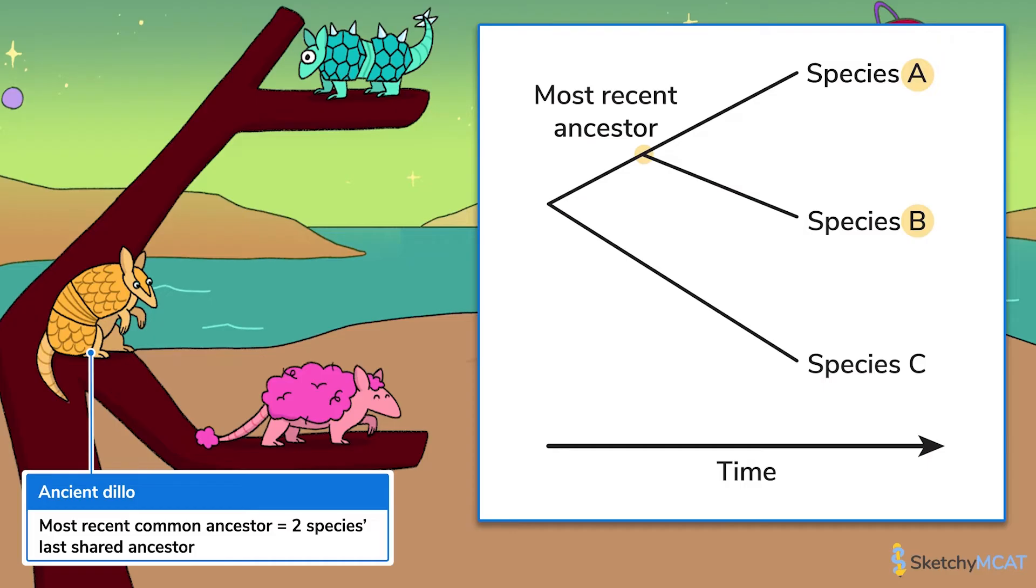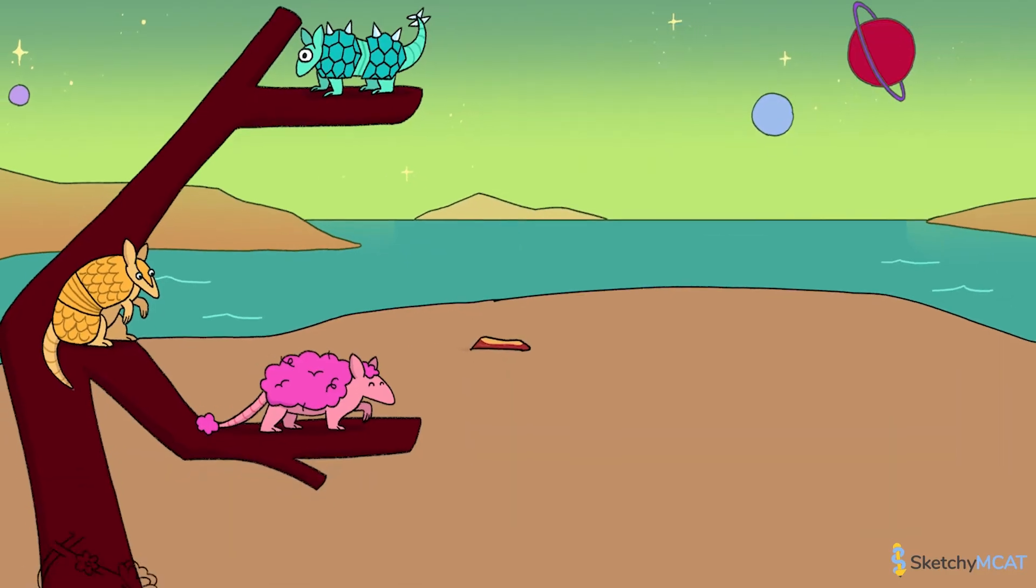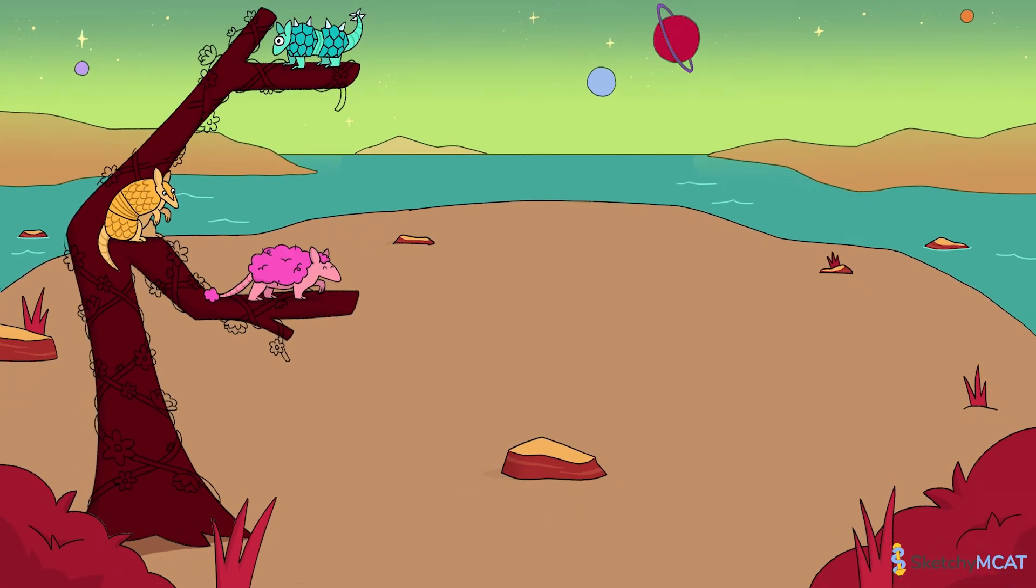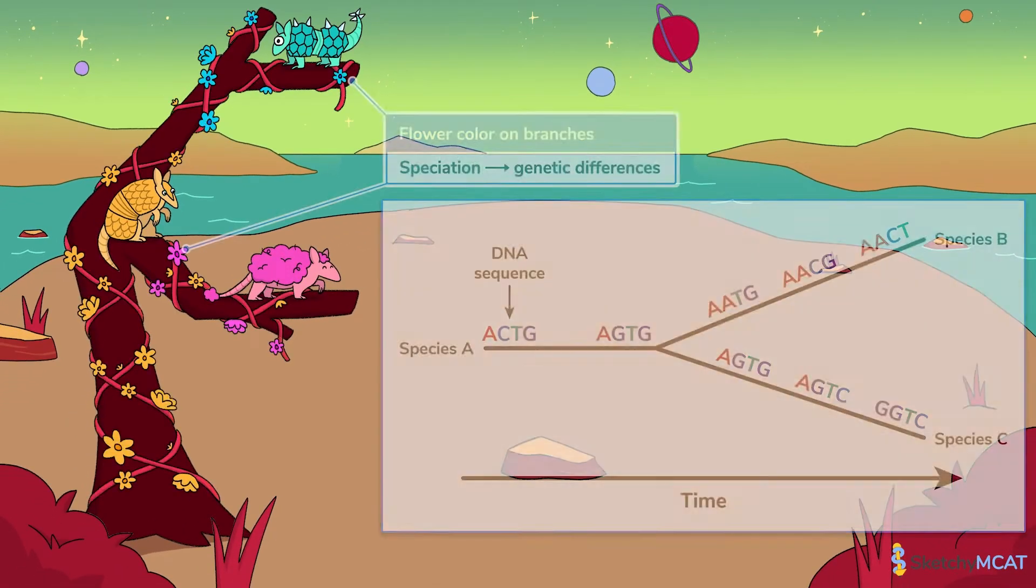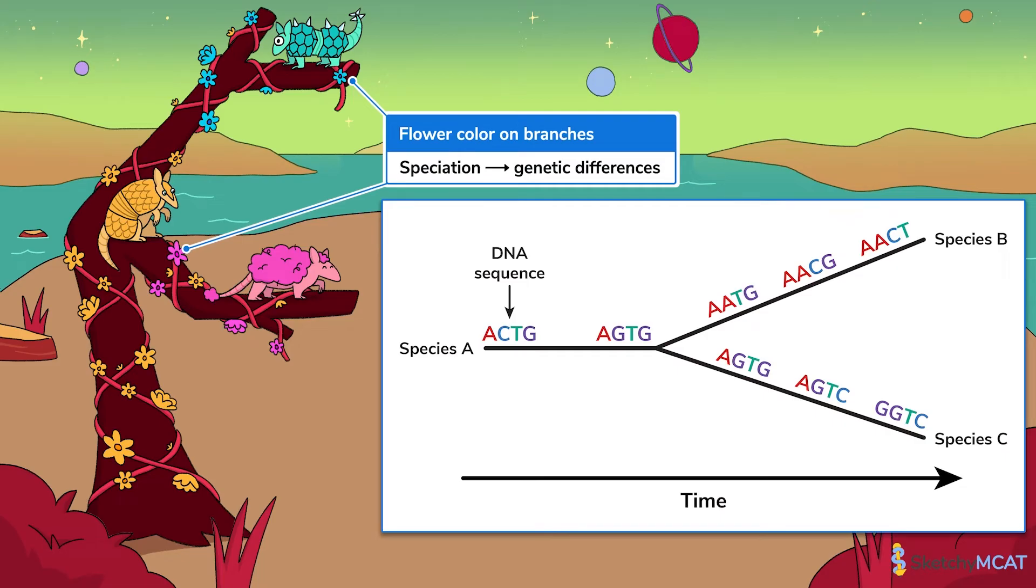Like these blue and pink space dillos that evolved from the ancestral yellow dillo at this branch point. Substantial genetic differences accumulate once two populations undergo speciation. You can see that as these tree branches diverge, the allele flowers on them also change, representing genetic changes over many generations.